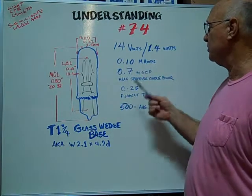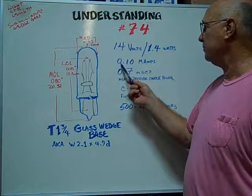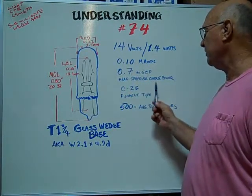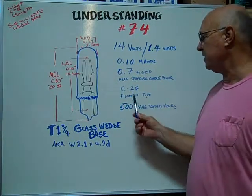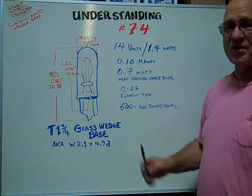It's rated at 14 volts, 1.4 watts. The milliamp rating is 0.10. The mean spherical candle power is 0.7. Filament type is a C2F. The average rated hours is 500 hours.